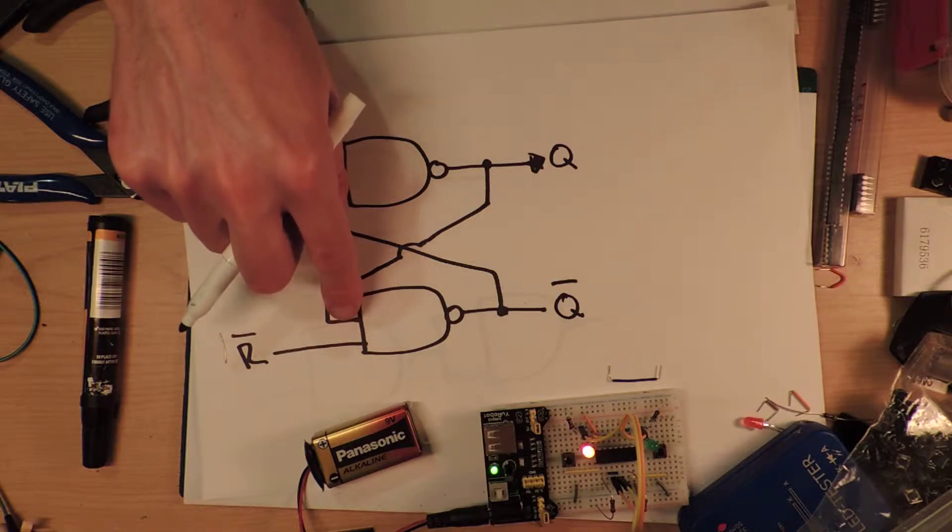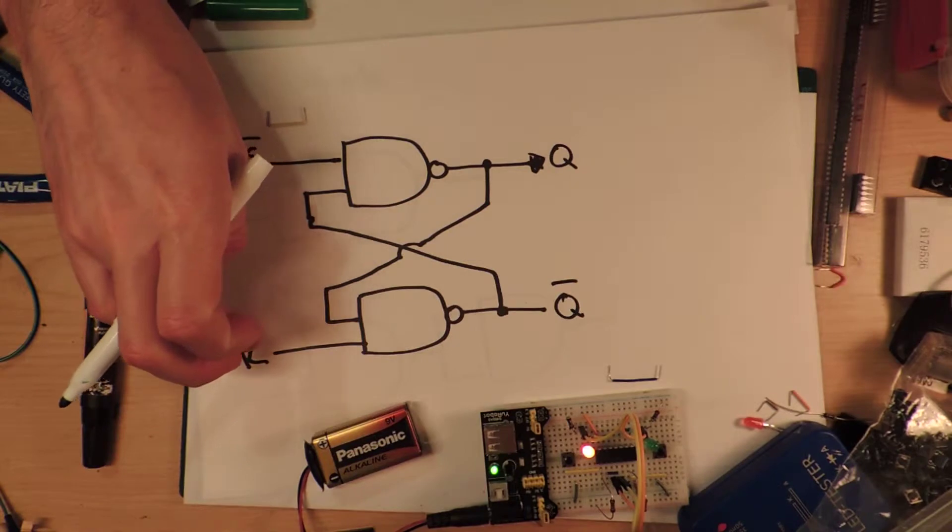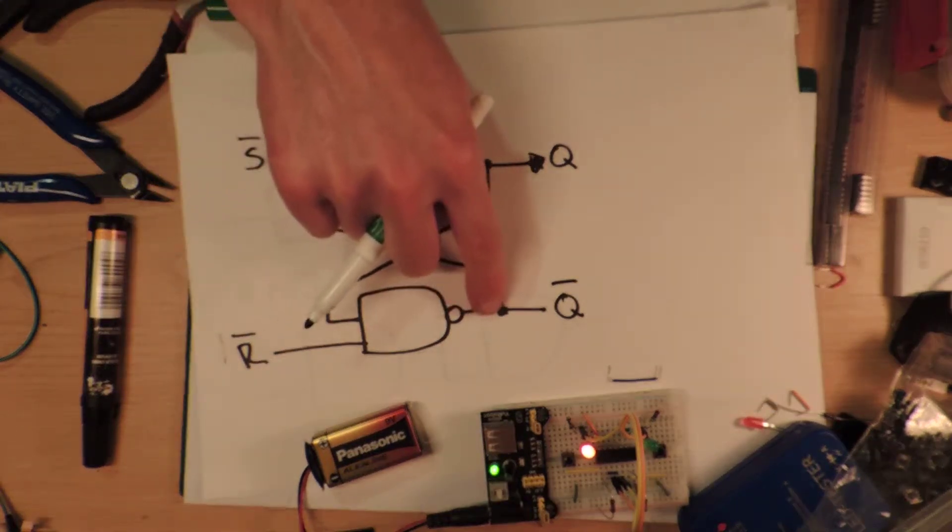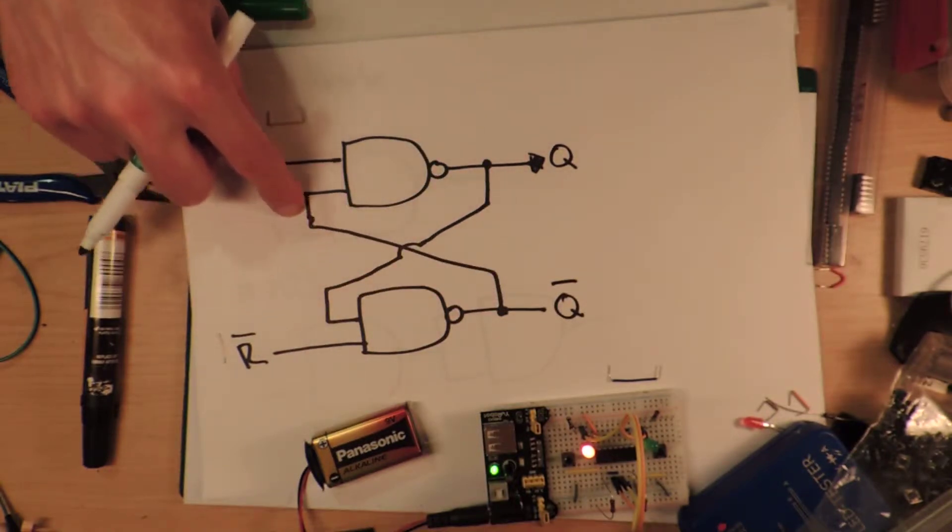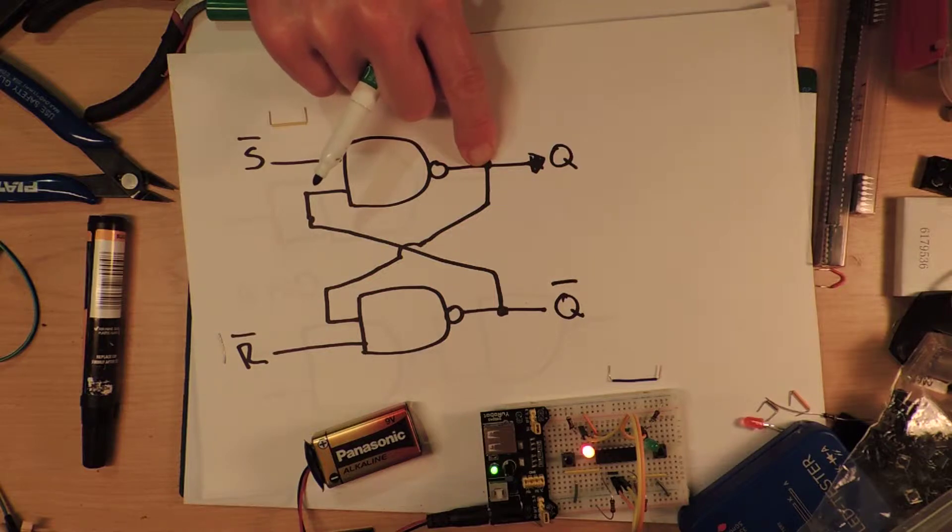The output on this one will become, hold on. Alright, so we make this one go high. Alright, that will change the output to low. The low one will go into here, and then this one will become on. So, I guess that makes sense.